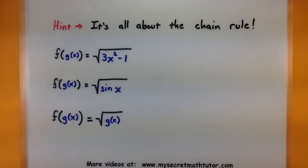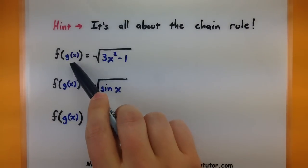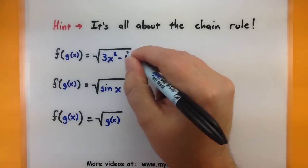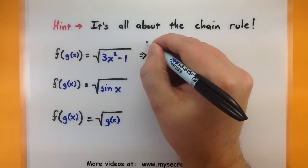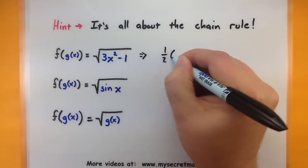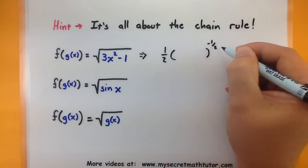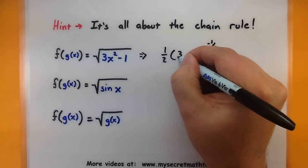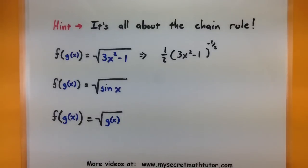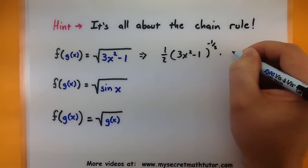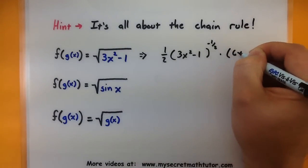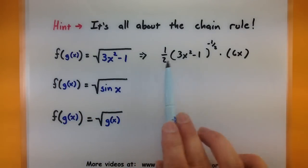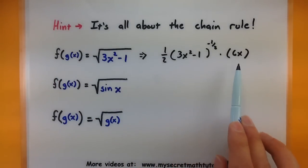So here's the idea. When we have a function inside of another function — let's say I have my g function inside of f — then we want to take the derivative of the outside. So in this case I'm going to work on that square root, taking its derivative. One half will reduce the power by 1, negative one half. So I've taken the derivative of the outside. Now we're going to leave that inside function just as it is, and then multiply by the derivative of the inside.